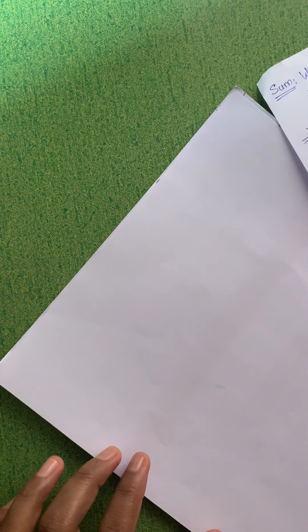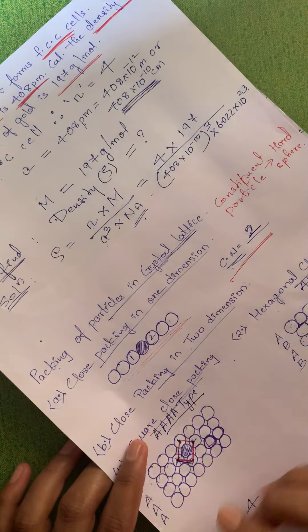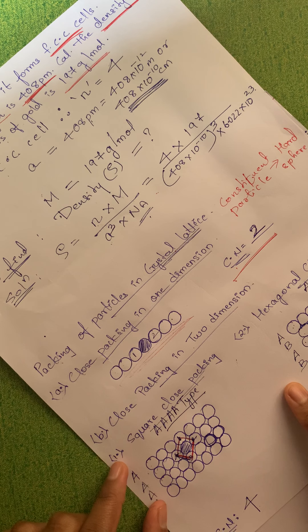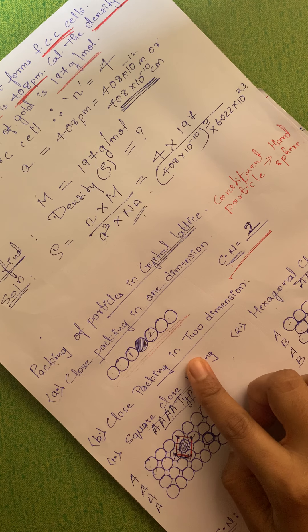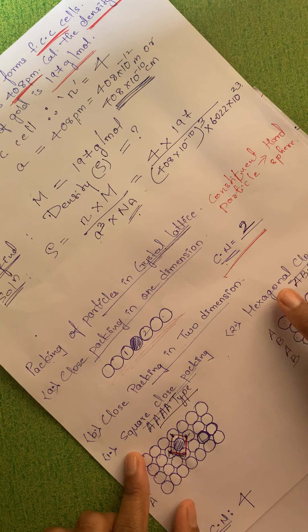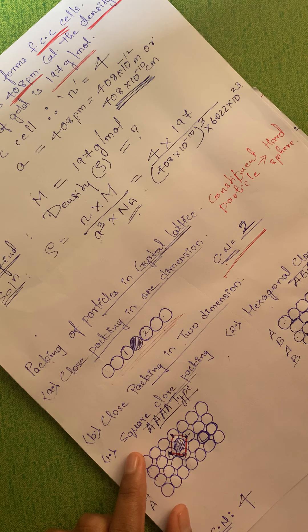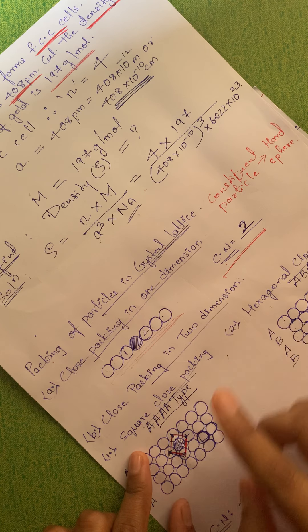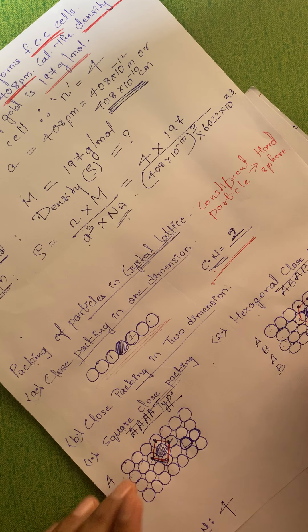Hello everyone. Last time we started with the packing of particles in crystal lattice and completed one-dimensional as well as two-dimensional packing. We know the coordination number of one dimension is two. For two dimensions there were two types: square close packing and hexagonal close packing. Today we will be learning three-dimensional packing, in which we will be using two-dimensional square packing as well as hexagonal close packing.